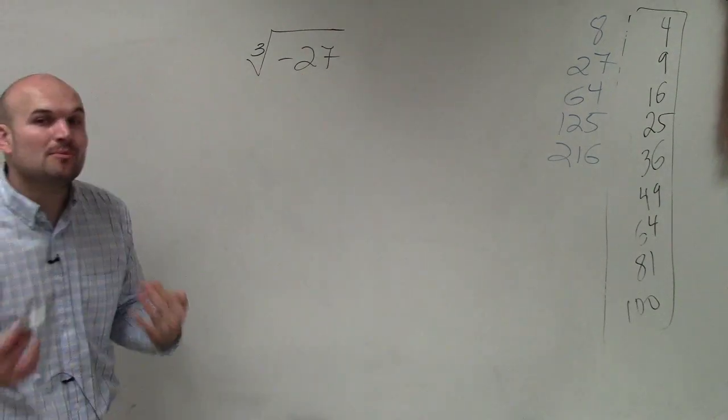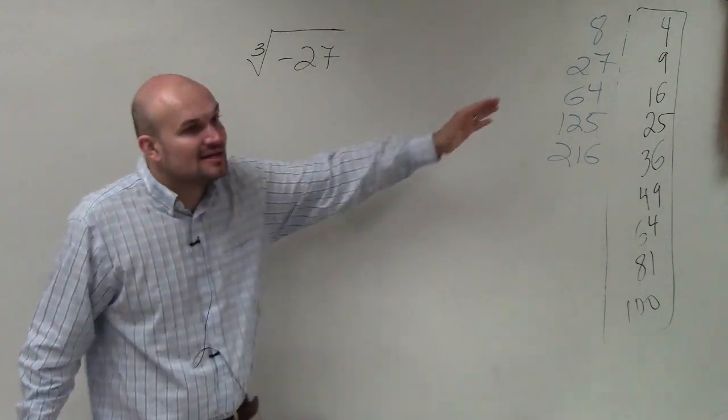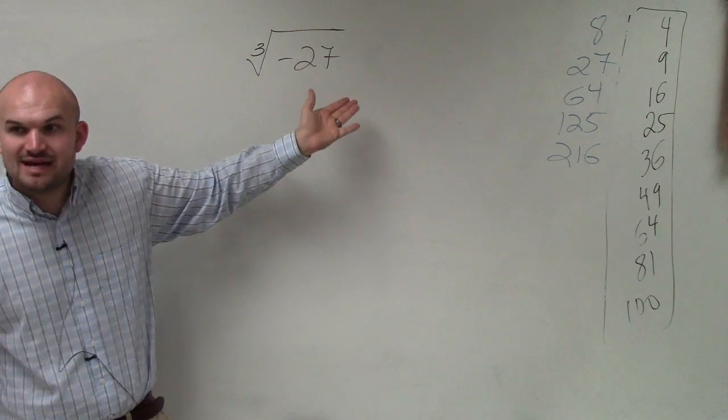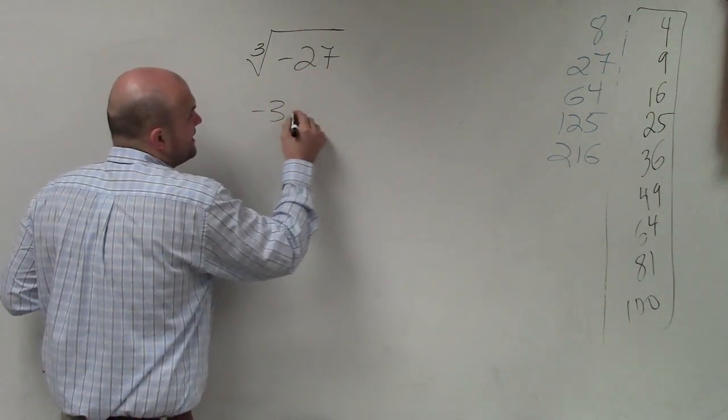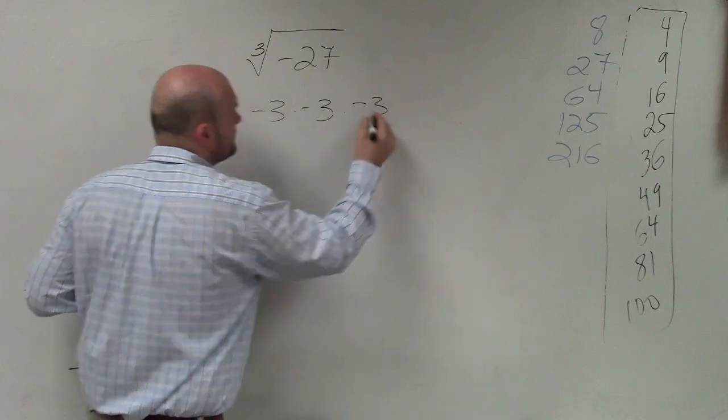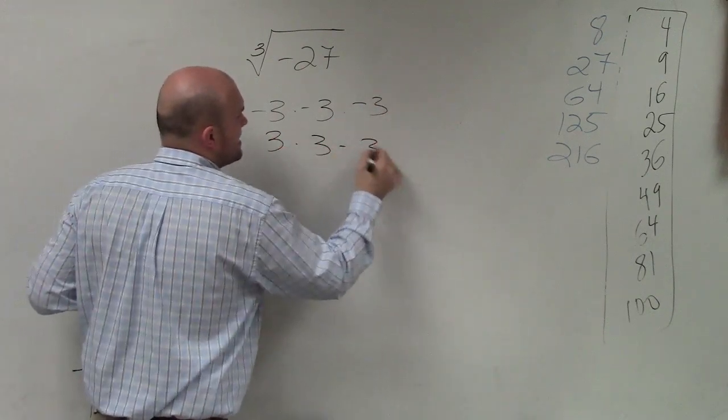So what you notice is, what number multiplied by itself three times gives us negative 27? Negative 3. Well, we only have two options. It's either negative 3 times negative 3 times negative 3 or 3 times 3 times 3. Right?